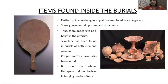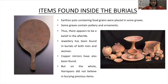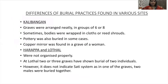Now let us see the items found inside burials. On the left-hand side you can see the copper mirror, and on the right-hand side the pots found during burials. Earthen pots containing food grains were placed in some graves; some graves contain pottery and ornaments, indicating a belief in the afterlife. Jewelry has been found in burials of both men and women. Copper mirrors have also been found, but on the whole Harappans did not believe in burying precious items.